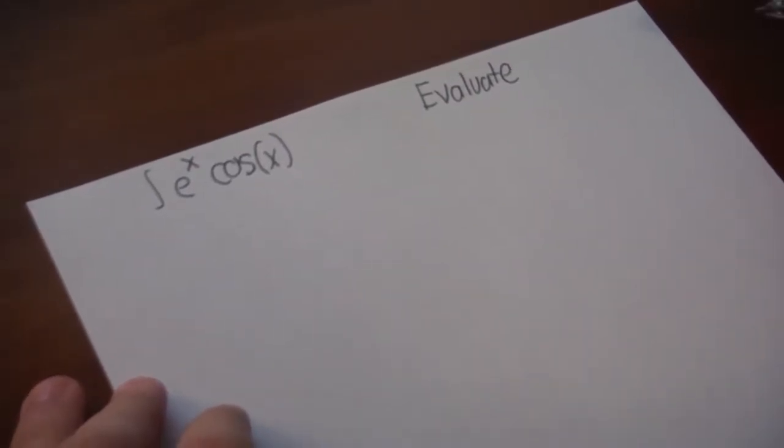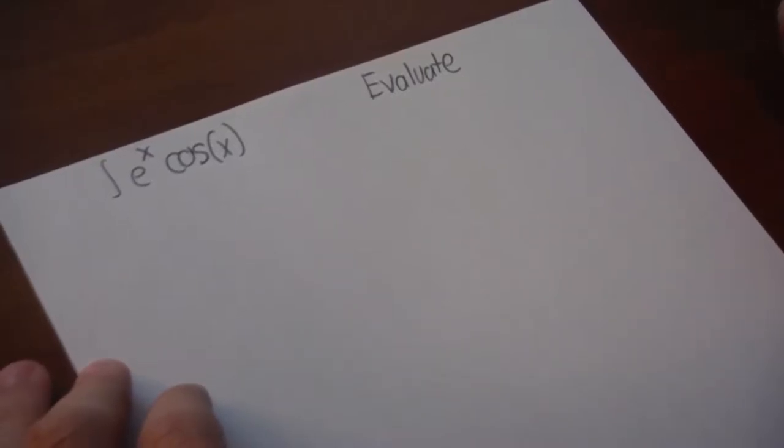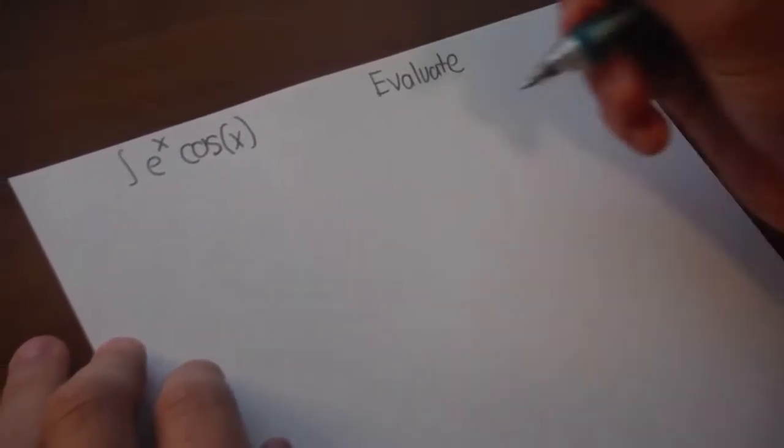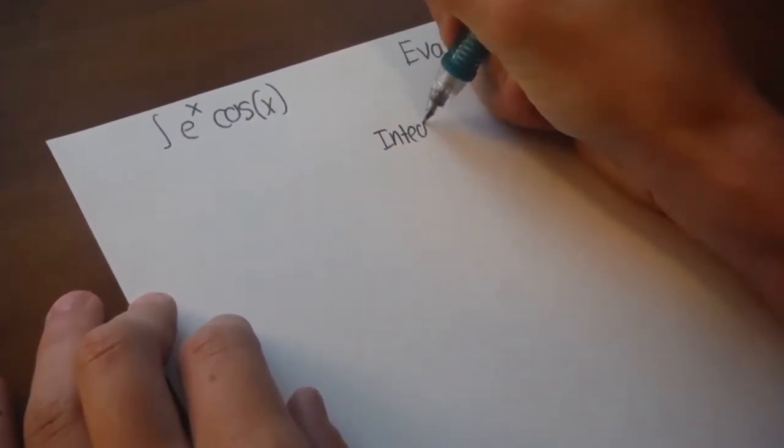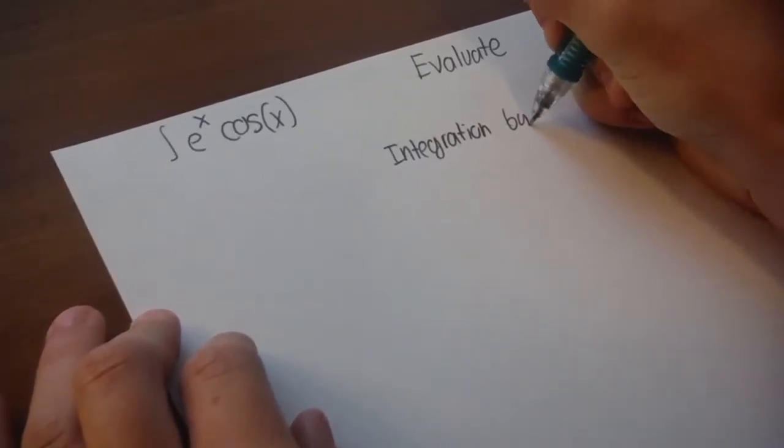So the problem today is the integral of e to the x times cosine of x. What you want to do is integration by parts,